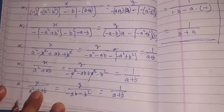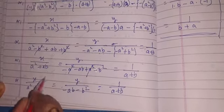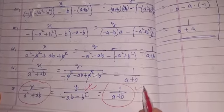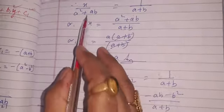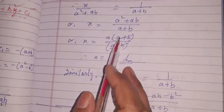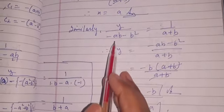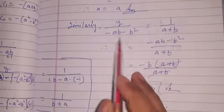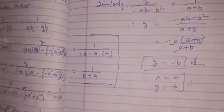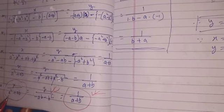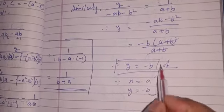Equating x term and last term: x/(a²+ab) = 1/(a+b). So x = (a²+ab)/(a+b). Factoring out a from numerator: a(a+b)/(a+b), so (a+b) cancels and x = a. For y: y/(-ab-b²) = 1/(a+b). So y = (-ab-b²)/(a+b). Factor out -b: -b(a+b)/(a+b), so (a+b) cancels and y = -b. These are the final answers.